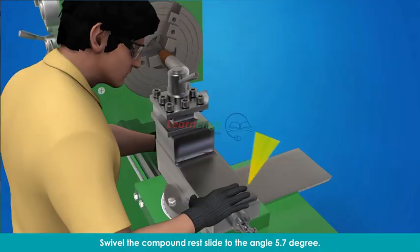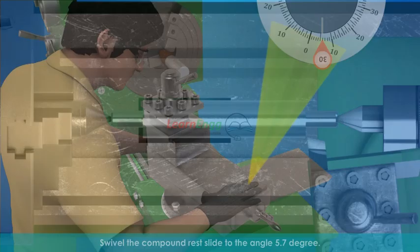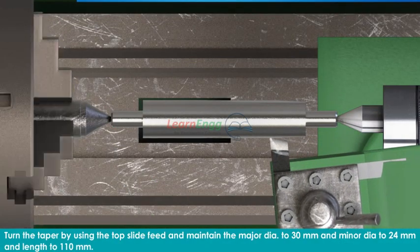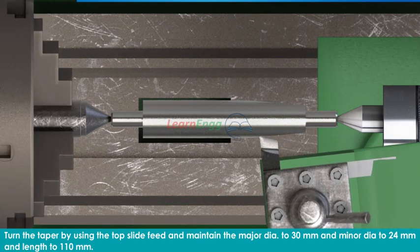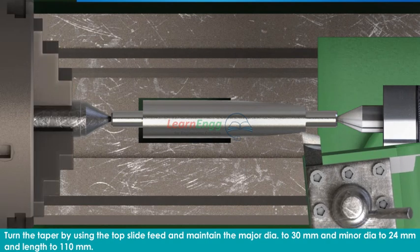Swivel the compound rest slide to the angle 5.7 degrees. Turn the taper by using the top slide feed and maintain the major diameter to 30mm, minor diameter to 24mm, and length to 110mm.